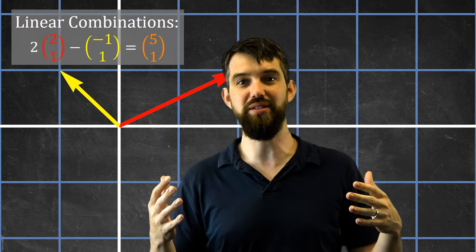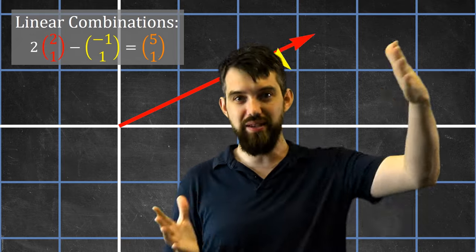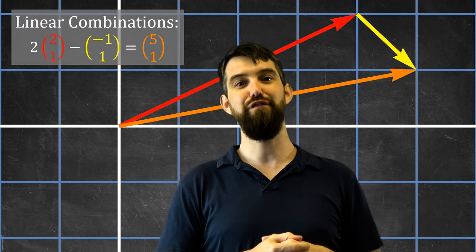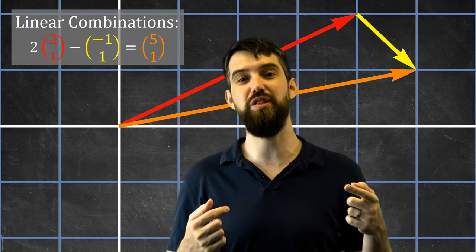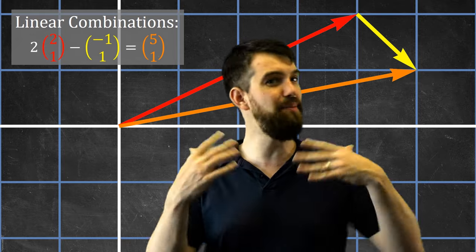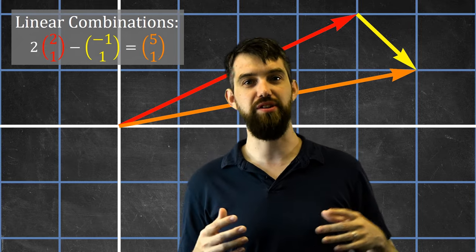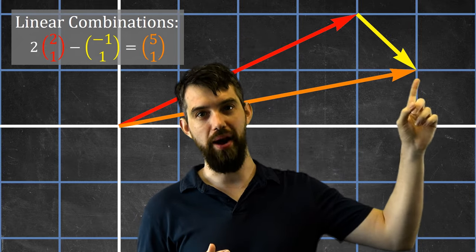Geometrically, this results in the red vector being stretched by a length of 2, the yellow vector being flipped around because of the minus 1, and doing tip-to-tail addition gives the orange vector going up to the point (5,1).